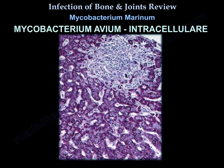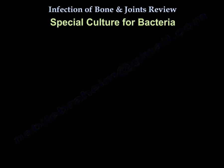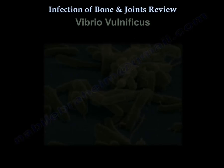Another atypical mycobacterium is Mycobacterium avium intracellulare. It occurs in terminal AIDS patients or in non-HIV patients. Some bacteria require special culture media: Kingella kingae grows in blood culture; Mycobacterium avium uses Middlebrook medium; E. coli uses Luria-Bertani medium; Neisseria gonorrhoeae uses chocolate agar if the specimen is from a sterile source like joint fluid, or Thayer-Martin agar if from a contaminated source such as a vaginal or urethral swab.